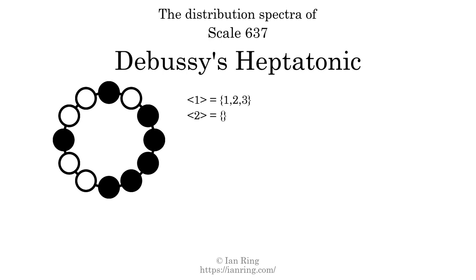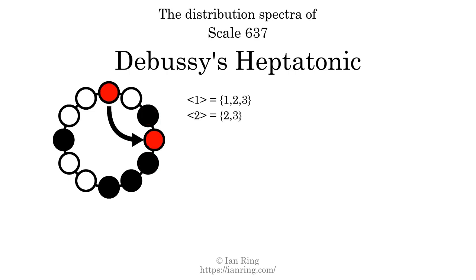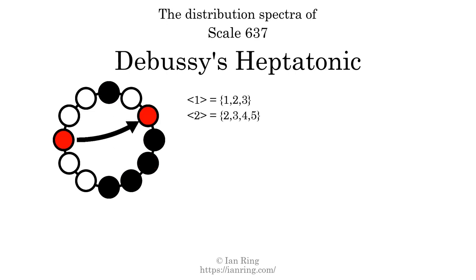The generic interval of two scale steps comes in 5 different specific interval sizes: 2 semitones, 3 semitones, 4 semitones, 5 semitones, and 6 semitones. The spectrum width of this generic interval is 4.